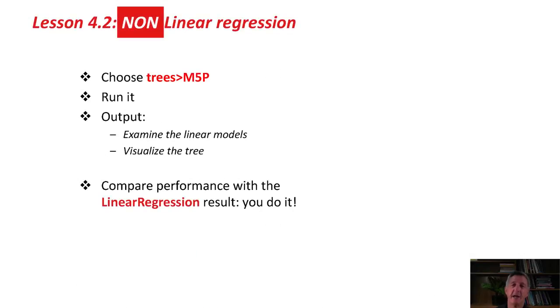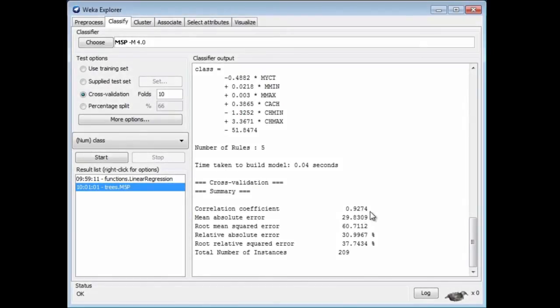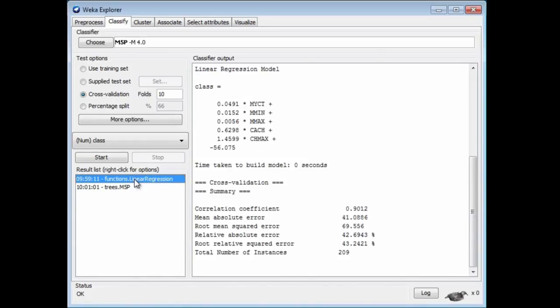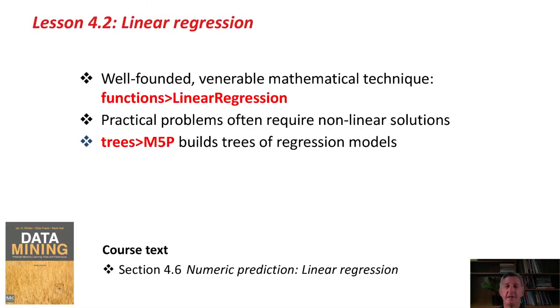We chose trees, M5P. We ran it, and we looked at the output. We could compare the performance of these performance figures, a 92-93% correlation, a mean absolute error of 30, and so on. We could compare those with the ones for the regular linear regression. We just got a slightly lower correlation and a slightly higher absolute error. In fact, I think all of these error figures are slightly higher. That's something we'll be asking you to do in the activity associated with this lesson.